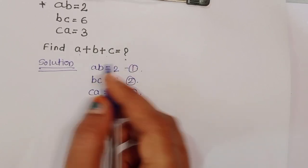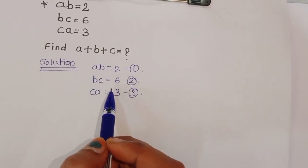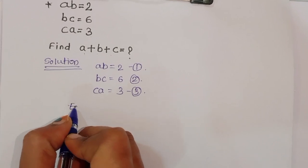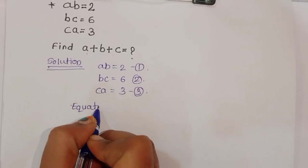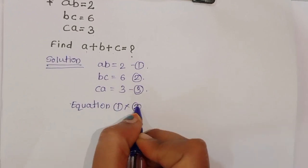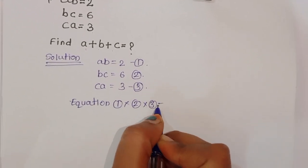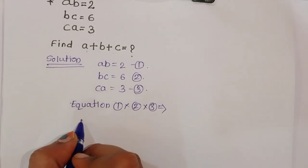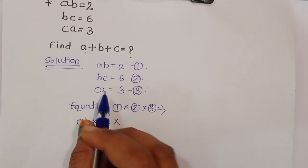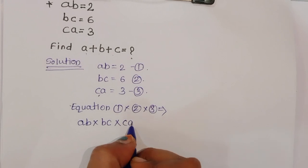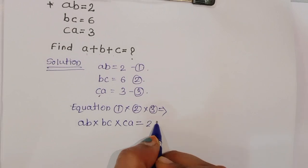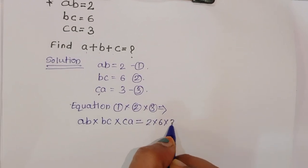Now we can multiply equation 1, 2, and 3 together. Equation 1 times equation 2 times equation 3 gives us AB times BC times CA is equal to 2 times 6 times 3 on the right-hand side.